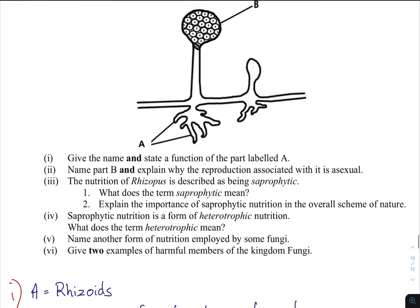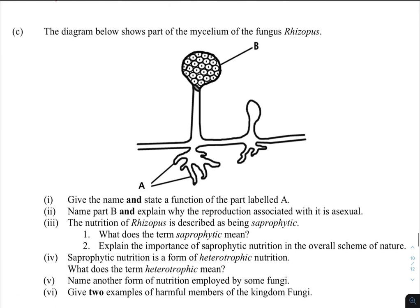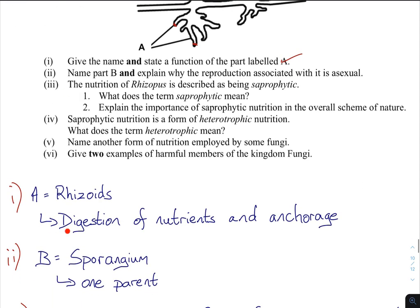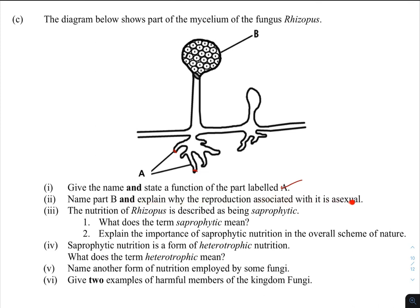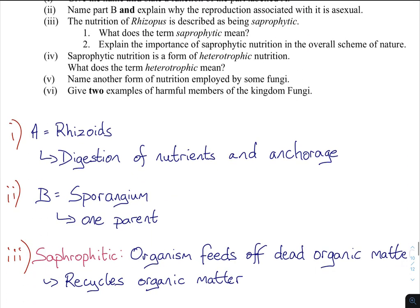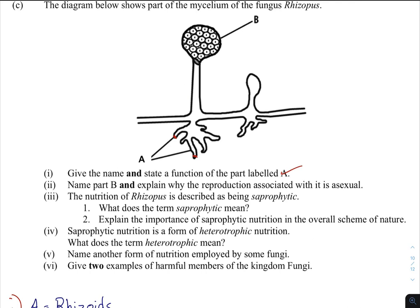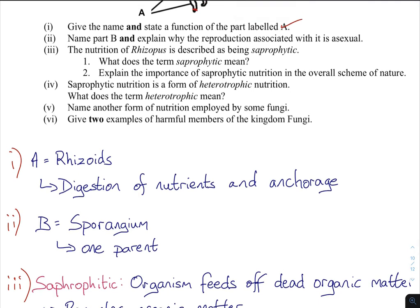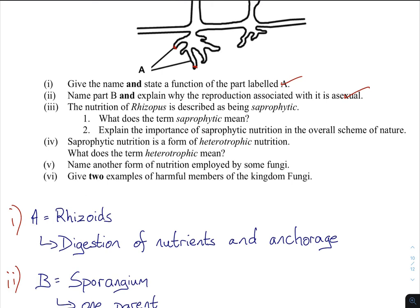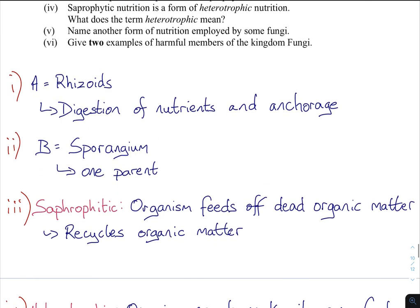2011, Question 15c. Give the name and state the function of parts of Rhizopus. The tips here are the rhizoids — and rhizoids are there for anchorage or for the absorption and digestion of nutrients. Part b is the sporangiophore — I was mixing those two up. The sporangium is the head. Why is reproduction associated with this asexual? Same as with yeast — one parent. Nutrition is saprophytic.